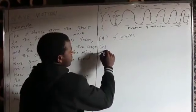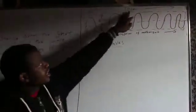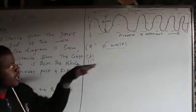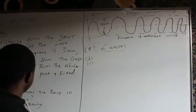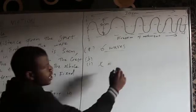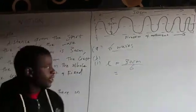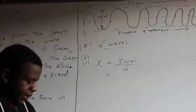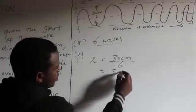Then B, roman numeral 1 — calculate the wavelength. I know that the distance the train travels is 30 centimetres and I have 6 waves. The symbol for wavelength is lambda, so lambda equals 30 centimetres divided by the number of waves, which is 6. So 30 divided by 6 gives me 5 centimetres.